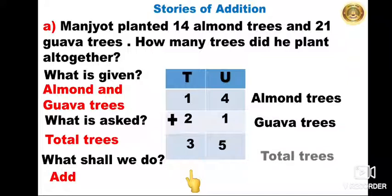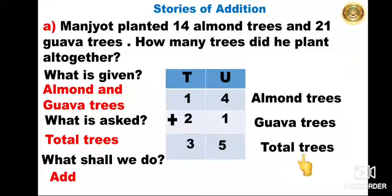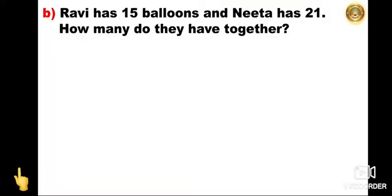We have got the total number of trees. When we added 14 plus 21, we got the total trees. What was asked? How many trees did he plant all together? The answer is: he planted 35 trees all together. I hope you must have understood this problem. Now let's do the next problem from the textbook.